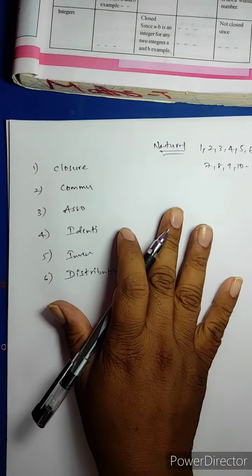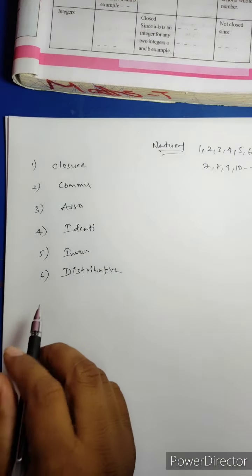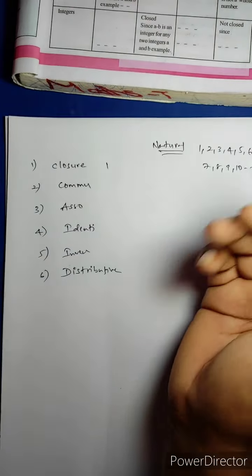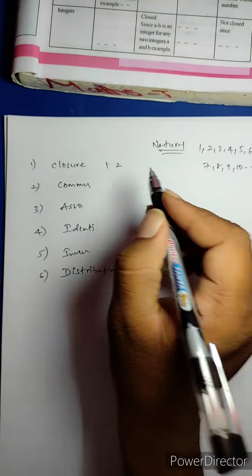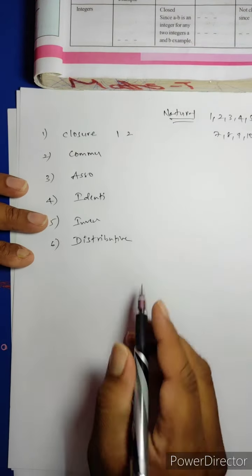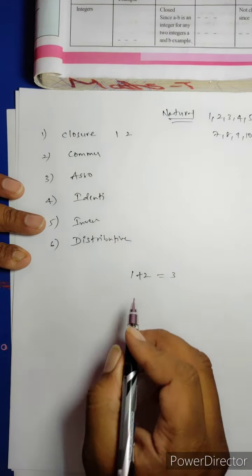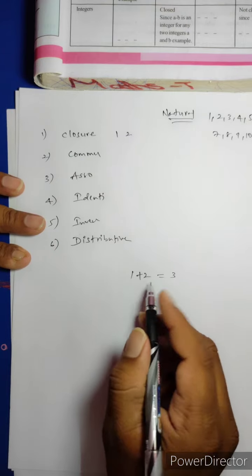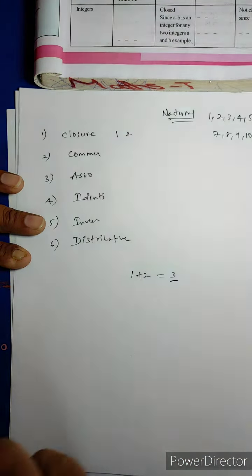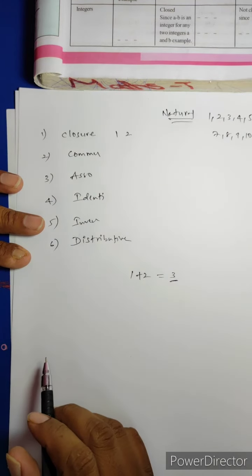For example with Natural Numbers: take any one natural number, say 1, and another natural number, say 2. If you add them, you get 3. This 3 also belongs to the set of Natural Numbers. That is called Closure property.